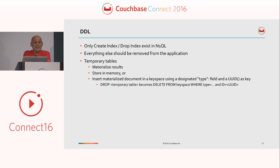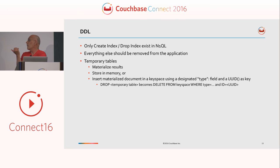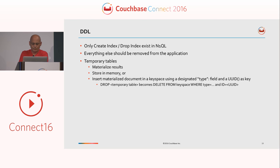The one exception is temporary tables. At some stage you will want to materialize temporary intermediate results and store them somewhere. You can either store them in memory, or you can use insert into select from. In your projection list, you'll have a new type field, probably the name of your temporary table. Since you'll have multiple requests, you need to differentiate for multiple users, so you'll also have to generate a unique ID so that each session can use its own temporary table. And then when you want to get rid of it, you just delete the document with the materialized results.